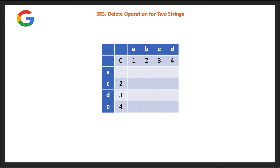For the bottom-up approach, I place word one horizontally and word two vertically in a 2D table. When both strings are empty, we need zero deletions. If word one is empty and word two has one character, we need one deletion; two characters, two deletions, and so on. Similarly, if word two is empty, we fill the first column with 0, 1, 2... matching the length of word one. Then we start filling from the first actual characters.